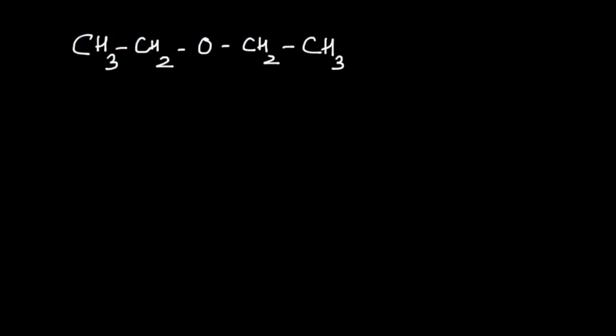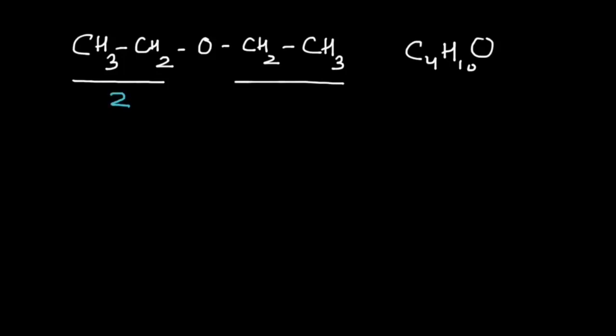Take a look at this ether — it has four carbon atoms and hydrogen atoms and one oxygen atom, and it has carbon chains on both sides of the functional group, so this molecule is capable of showing metamerism. How many carbon atoms are present on the left side? Two. And on the right side? Once again, two.